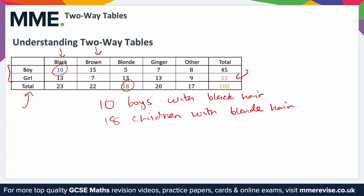What about the fifty-five here? It's in the total column and in the girl row, so there are fifty-five girls. What about the one hundred? That's in the total column and the total row, so there are a hundred children overall.